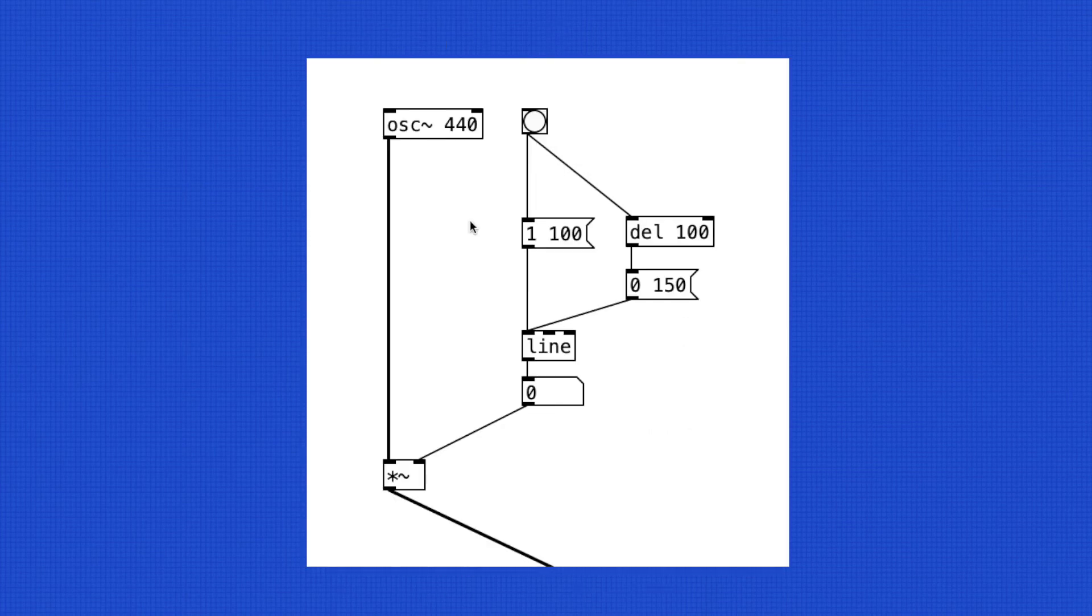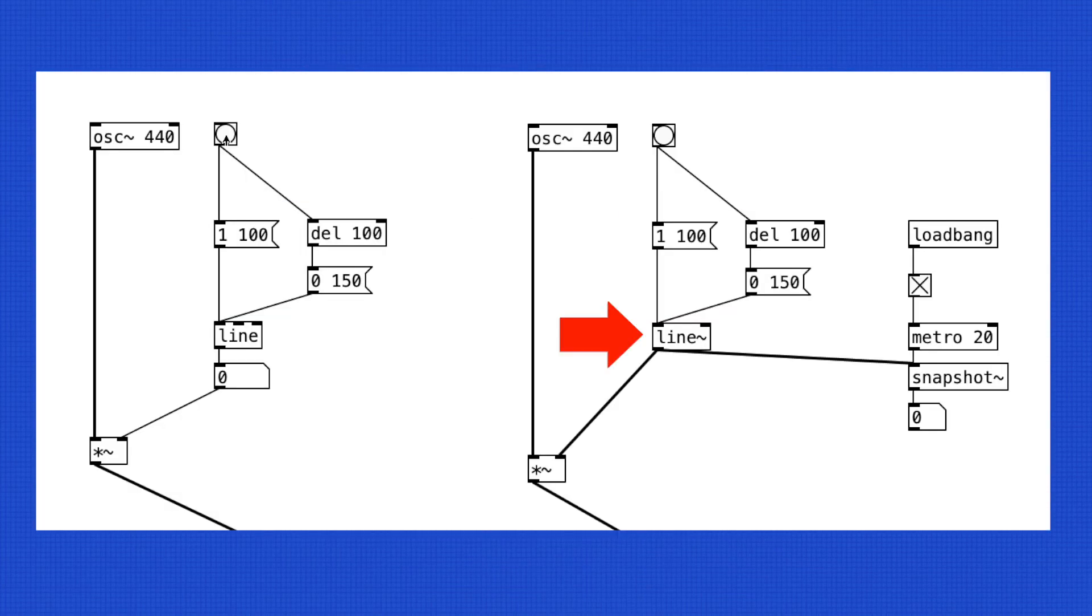So again, here's the envelope with short attack and release time using the line object. And here's the same envelope but with the line tilde object. It's a lot smoother and less noisy.